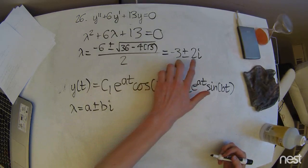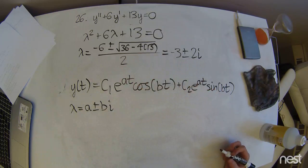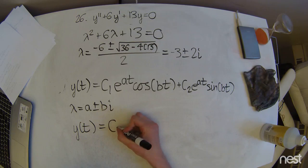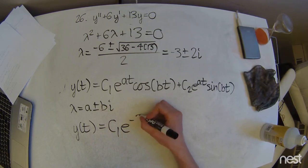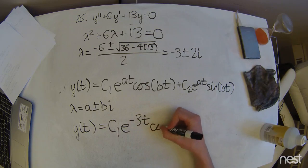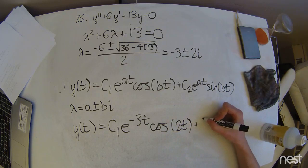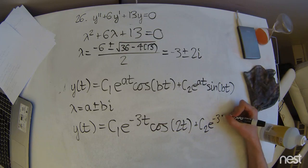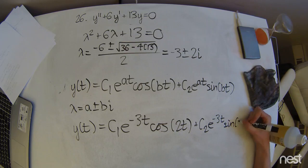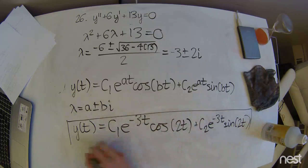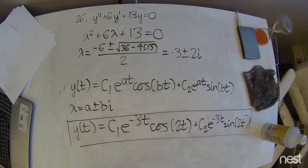We can see that we have exactly that from our calculator or our very smart brains. So we're going to plug it in and get our solution, which is c1 e to the negative 3t cosine of 2t plus c2 e to the negative 3t sine of 2t. And there you go — that's the solution.